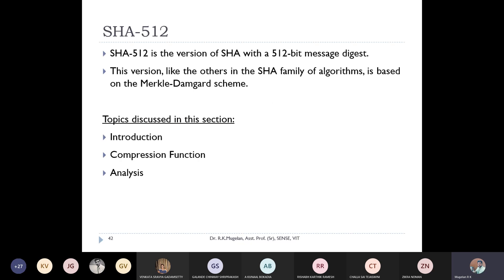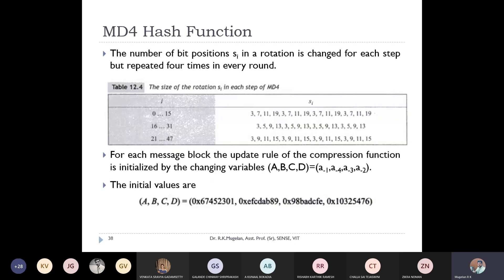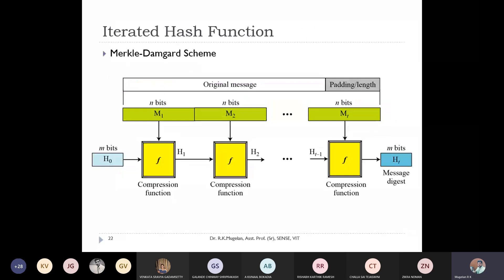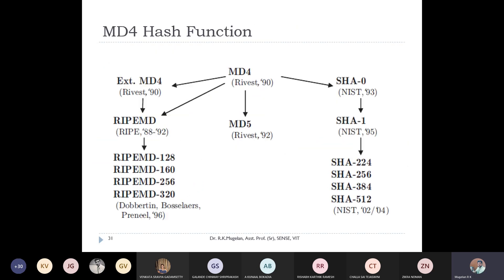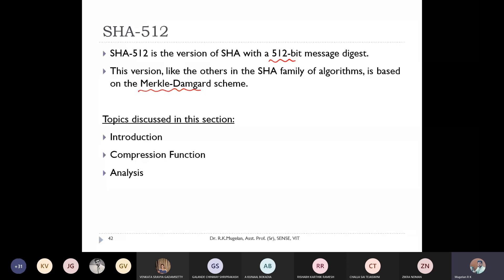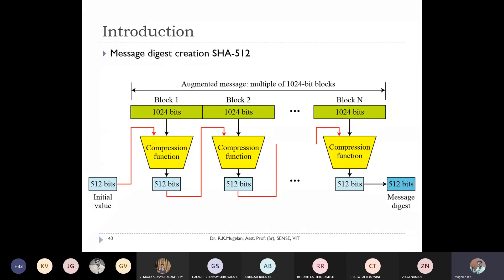SHA-512, as the name suggests, produces a message digest of size 512 bits. This SHA algorithm is also based on the Merkle-Damgård scheme. In the Merkle-Damgård scheme, there is a compression function where we reduce incoming n-bit messages with respect to an m-bit seed value to produce an m-bit hash value.